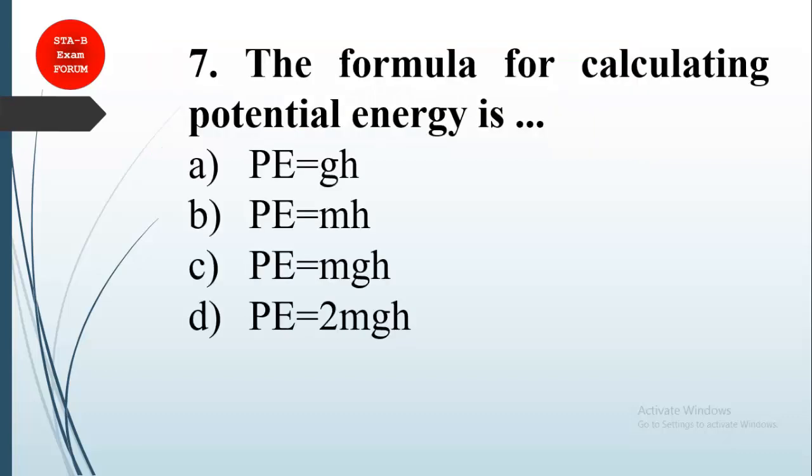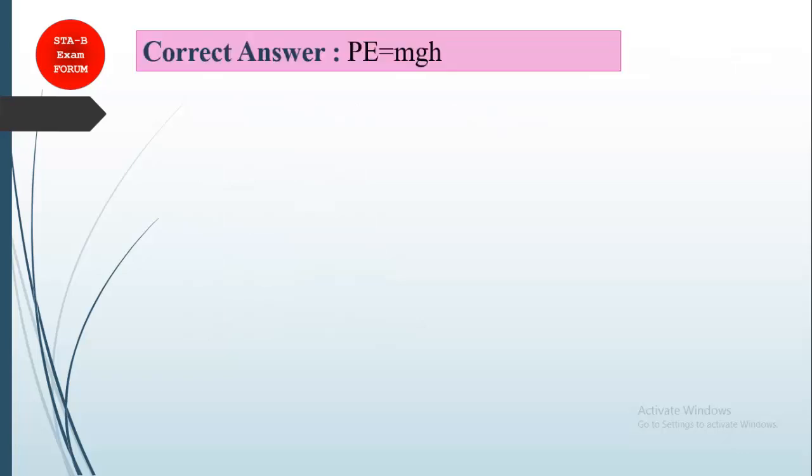Again, this is from potential energy question: the formula for calculating potential energy is what? You must should know this thing. Potential energy is MGH. The previous question you can think of MGH, because potential energy generally depends upon gravity, height, and mass. So the correct answer is option C: MGH.